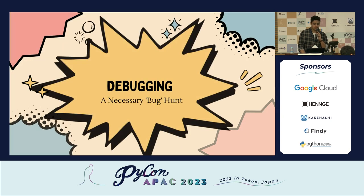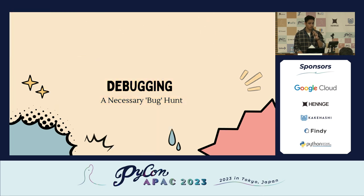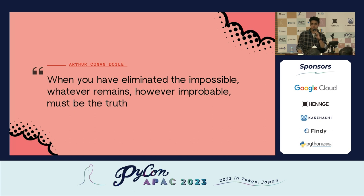The second thing is debugging. Once we've added some logging, a bug came into our monolithic banking app — how do we fix it? There's a famous quote by Arthur Conan Doyle: 'When you have eliminated the possible, whatever remains, however improbable, must be the truth.' So when you have eliminated most of the impossible bugs, whatever remains is going to be the bug causing the issue.